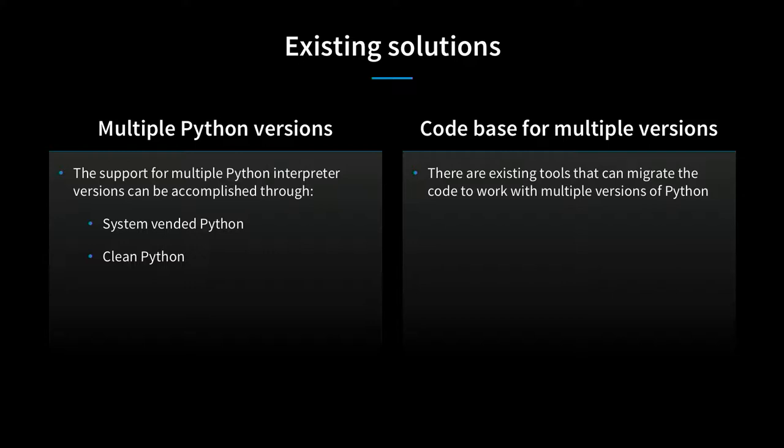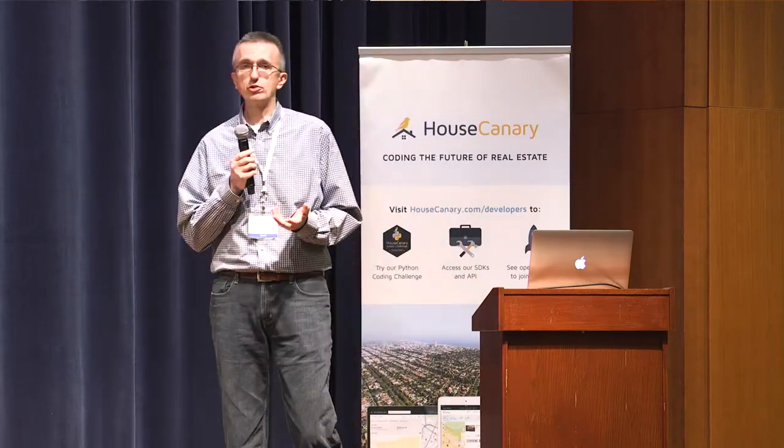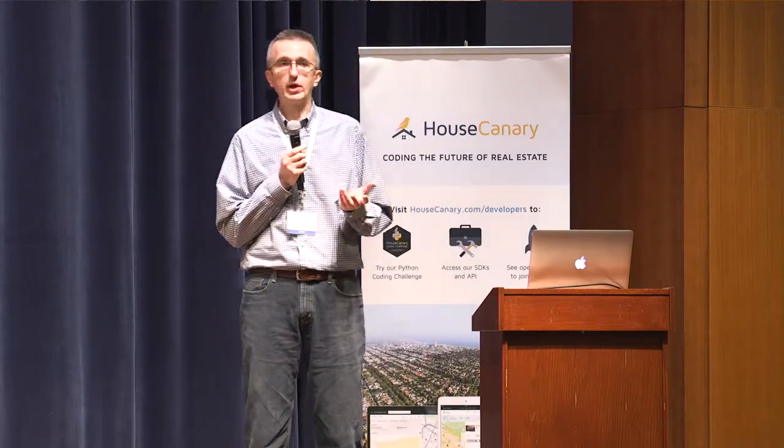The right side—porting code for multiple versions—there are existing solutions over the last decade and we didn't want to change anything too much there. But we had to adopt it. When providing multiple versions, you can go two ways: do you go with vendor-supported Python again for multiple versions, or do you go with your own clean Python build?